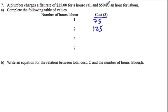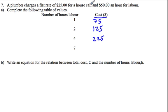For four hours, it's going to be $225 — four times 50 is 200, plus 25. And seven times 50 plus 25 is $375.